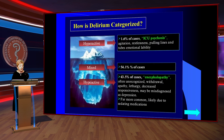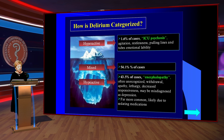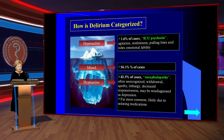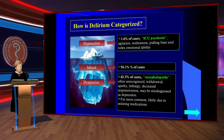How is delirium categorized? Hyperactive delirium — also called ICU psychosis — involves agitation, restlessness, pulling of lines and tubes, and emotional lability. Mixed delirium accounts for above 54% of cases. Hypoactive delirium, connected with the term encephalopathy, is often unrecognized and includes withdrawal, apathy, lethargy, and decreased responsiveness; it is far more common and is likely due to sedative medication.